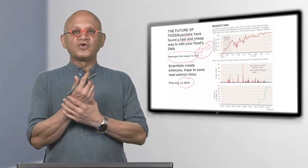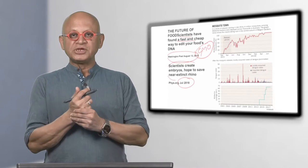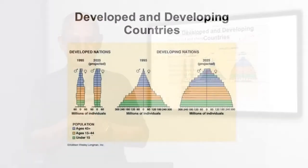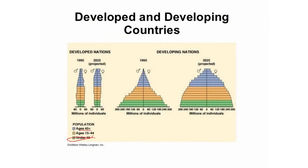What is the advantage of looking at the population distribution? This range goes from under 15, 15 to 44, and 45 plus. The top ranges are in the 80s, and if you look at the developing nations, under 15, the bottom of the pyramid is quite solid. There is a large number of young people in developing countries.